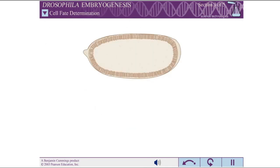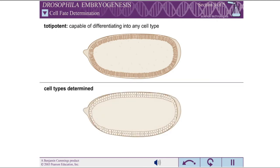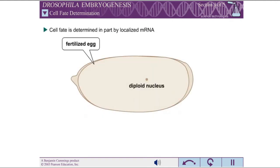When the nuclei reach the edge of the cell, they are totipotent, meaning they have not yet taken on a specific identity and can give rise to any cell type. Just after cellularization, however, the nuclei have been irreversibly determined to differentiate into specific tissues in the adult fruit fly. The location of each nucleus determines its fate.